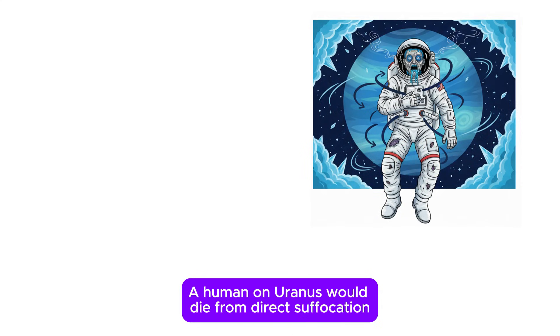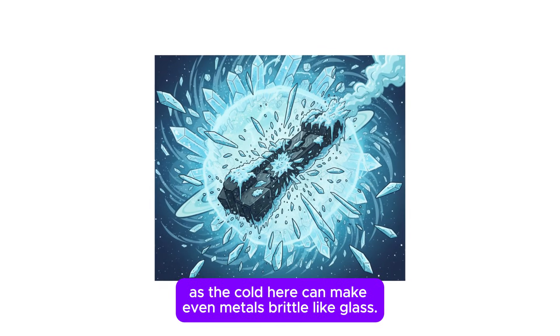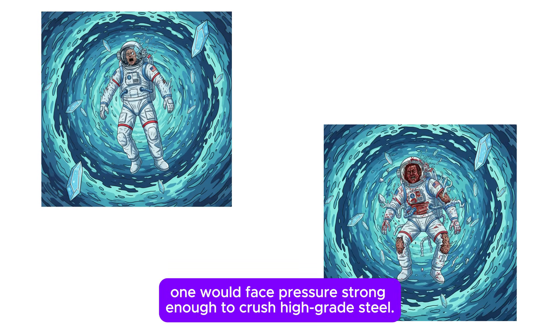A human on Uranus would die from direct suffocation, followed by tissues freezing rapidly, as the cold here can make even metals brittle like glass. Falling deep into its gaseous layers, one would face pressure strong enough to crush high-grade steel.